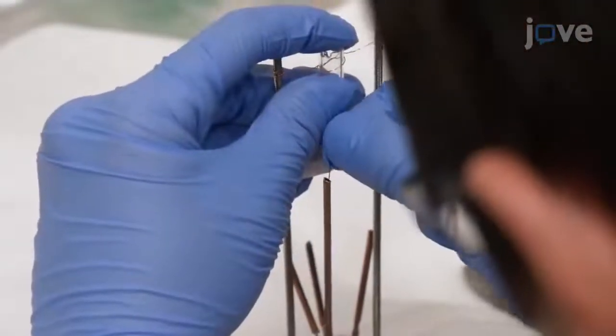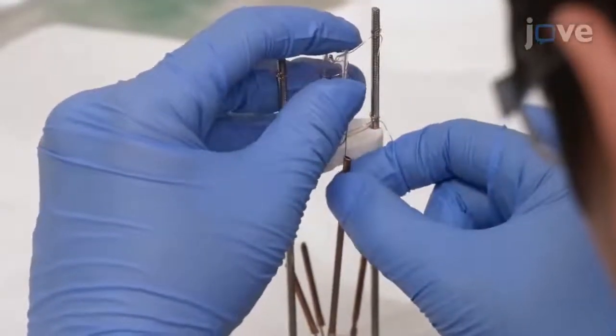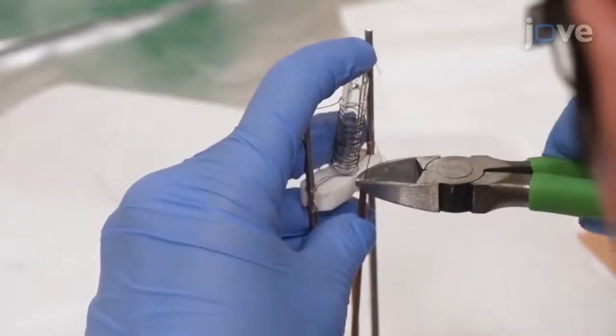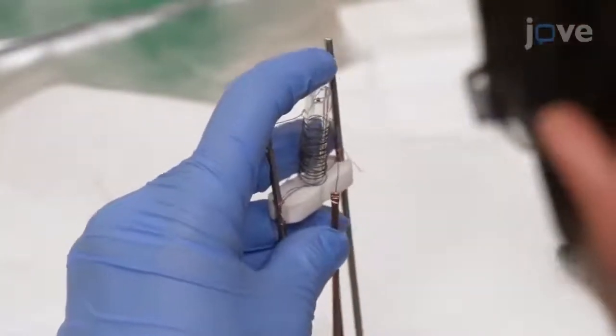Insert the wire from the bottom of the spring into the long hollow copper rod. Use a side cutter to pinch the top of the rod shut to hold the wire in place.